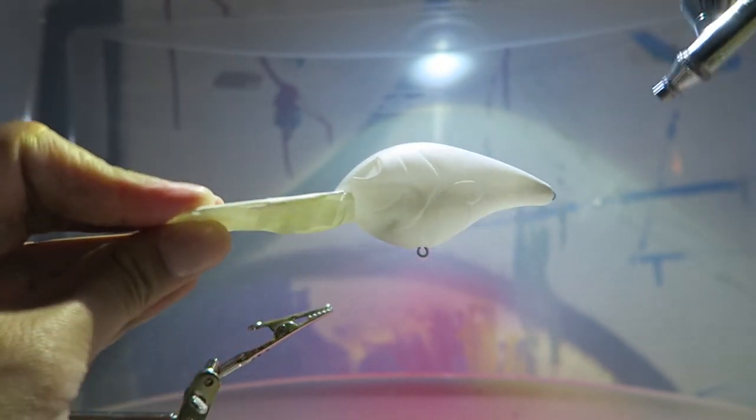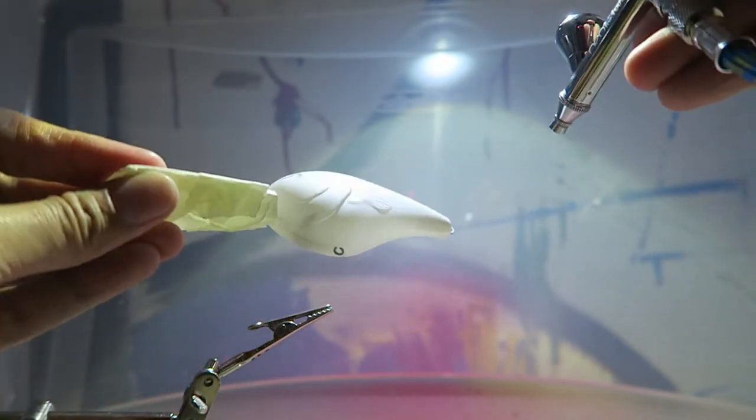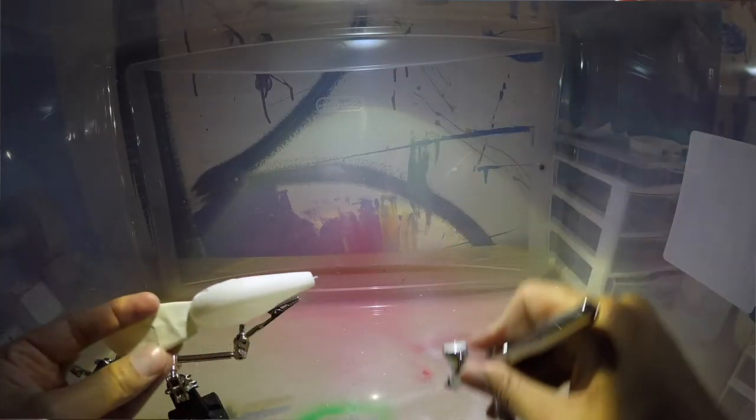The first thing you're going to do is tape off your bill because you don't want to get any paint on that, and then you're just going to hit your lure with a white base coat.